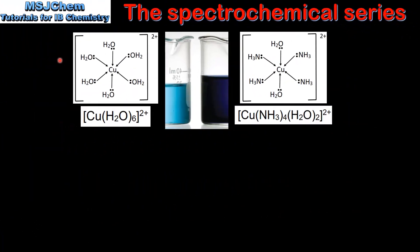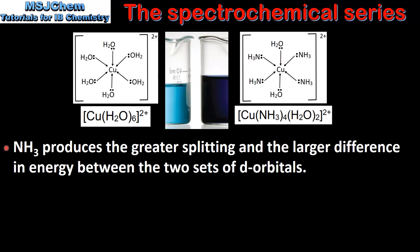Next we look at what happens when a strong field ligand replaces a weak field ligand in solution. On the left we have the hexa aqua copper 2 ion which forms a light blue color in solution. On the right we have the tetra amino diaqua copper 2 ion which forms a violet color in solution. The difference between these two complex ions is that the four water molecules have been replaced by four ammonia molecules. So ammonia, being a stronger field ligand, produces the greater splitting and the larger difference in energy between the two sets of d orbitals.